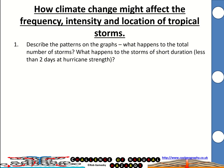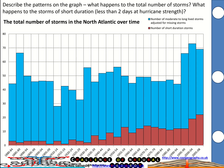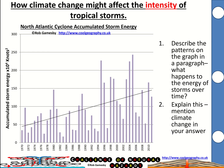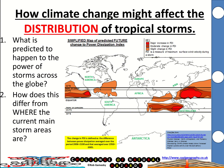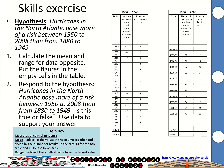In terms of your tasks, you need to describe the pattern on the graphs — what happens to the total number of storms and the number of short-duration ones. Then describe the patterns on the energy graph — what happens over time? Can you say why, mentioning climate change in your answer and talking about the amount of energy available? Then using the map, describe what's predicted to happen to the power of storms across the globe and how this differs from where the current main storm areas are at the moment.